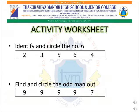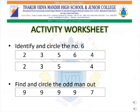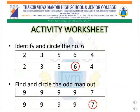Are you all ready with your books and pencils? So here we begin with question number 1: Identify and circle the number 6. So here, we circle number 6. We move on to the next question: Find and circle the odd man out. Number 7 is the odd man out.